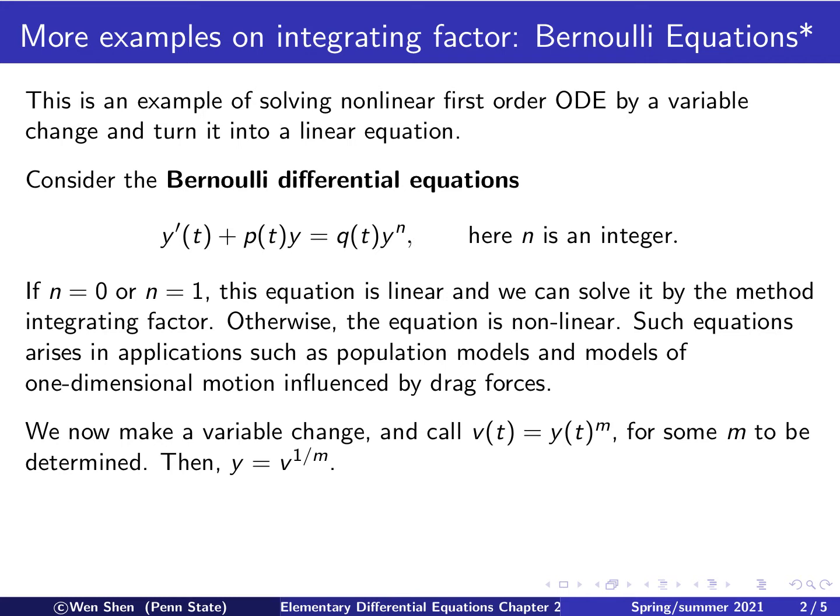This equation, however, has this interesting property. Under suitable variable change, we can change the equation into a linear one. Let's look at that. So let's introduce a new variable, v(t), to be y(t) to the power m. And now v is my unknown.